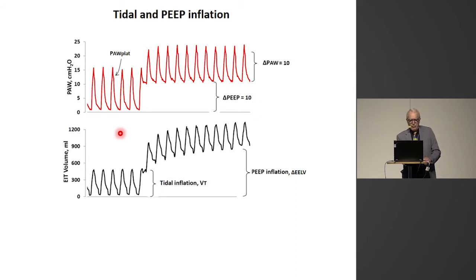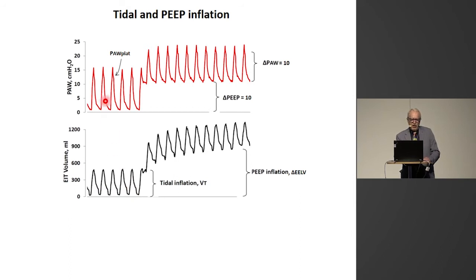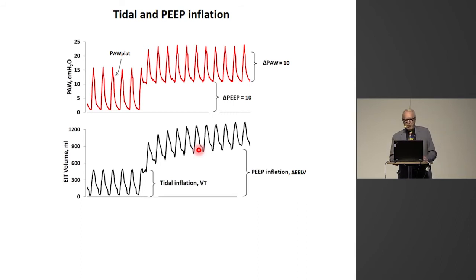Here you see the airway pressure and the volume measured by electric impedance tomography. At baseline PEEP of zero centimeters of water, we have a tidal volume of 500 and an airway driving pressure of 10. When we increase PEEP to 10 centimeters, it causes a successive inflation of the lung breath by breath until you reach a new steady state — it takes about one to five minutes. This is a PEEP inflation, and it causes an increase in end-expiratory lung volume.